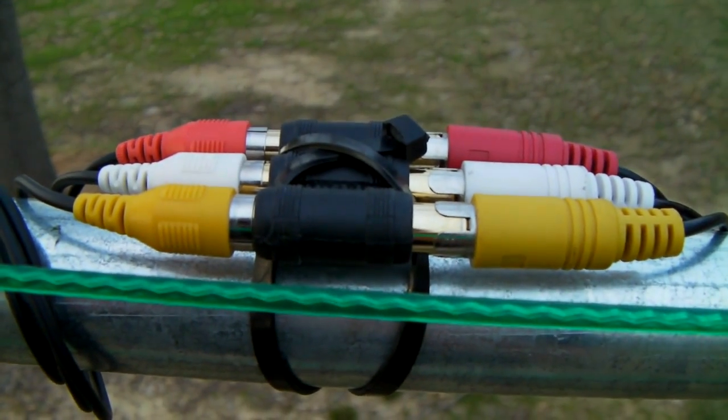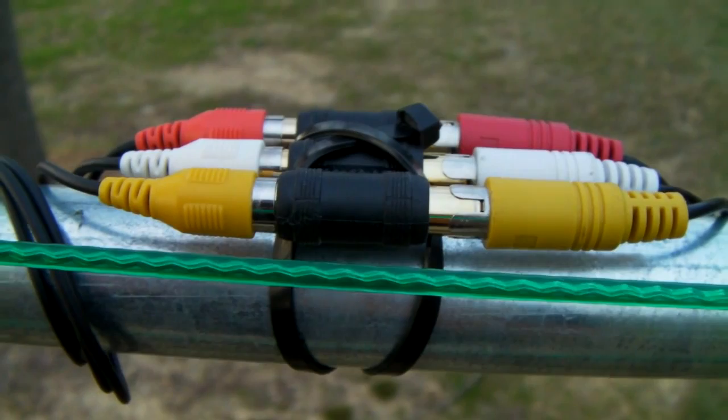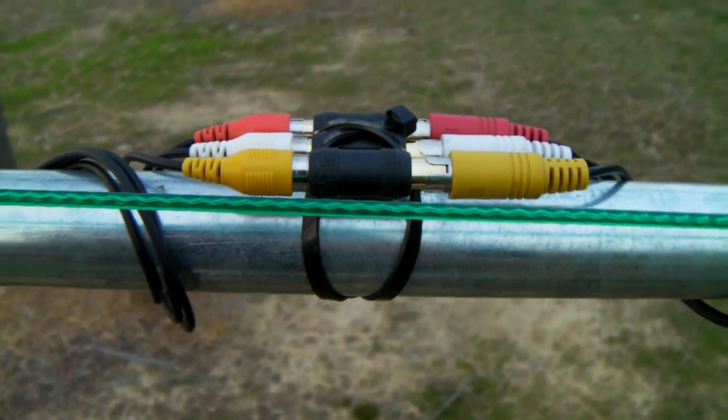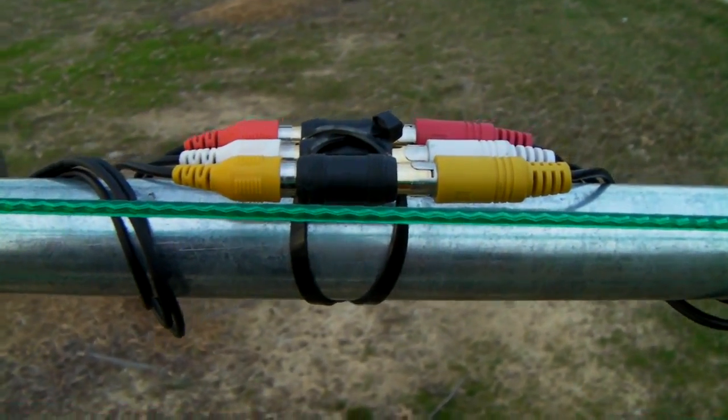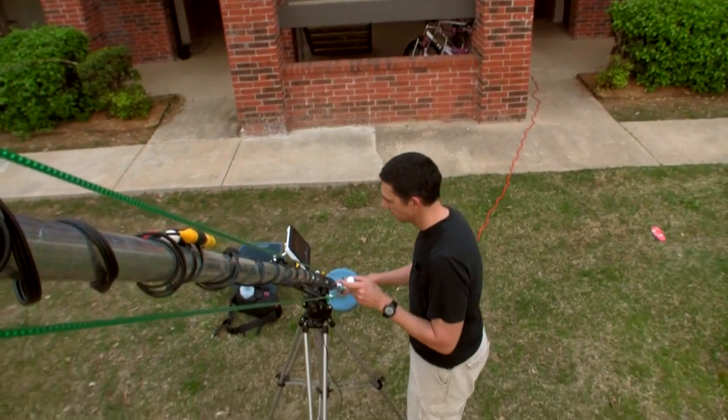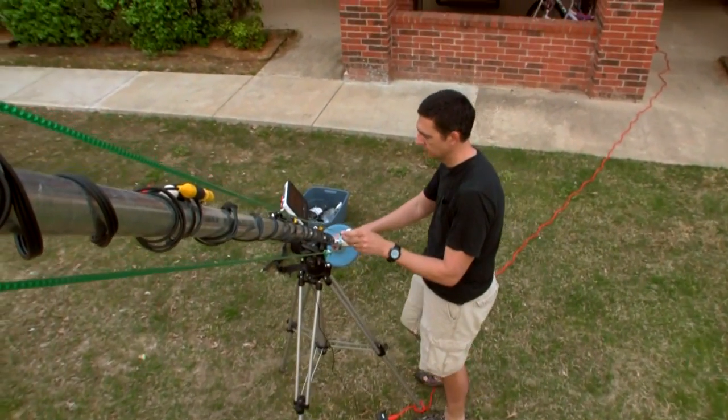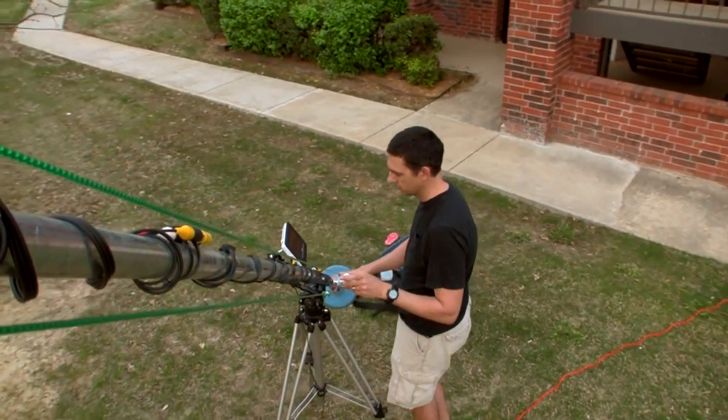To run the composite signal from the camera to the monitor, I'm running some RCA cables down the length of the pipe of the crane, which is pretty long. So I've got a couple couplers in between these different lengths of cable.